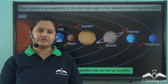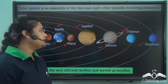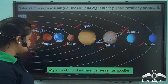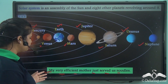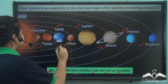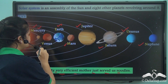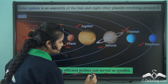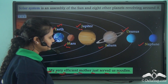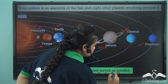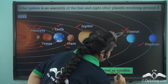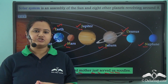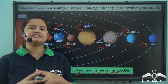Now, the trick to remember the names of the planets is: 'My Very Efficient Mother Just Served Us Noodles.' Taking the first letter of each word — M stands for Mercury, V for Venus, E for Earth, M for Mars, J for Jupiter, S for Saturn, U for Uranus, and N for Neptune. This is an easy trick to remember the names of all eight planets.